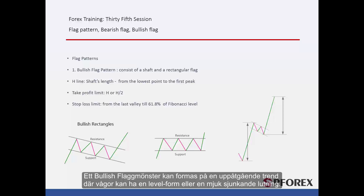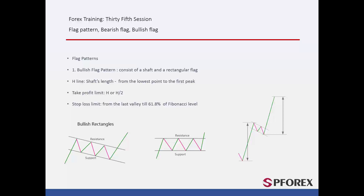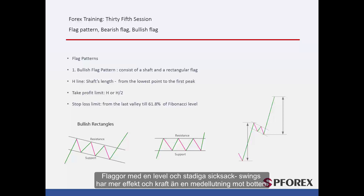A bullish flag pattern can be formed on an upward trend, in which waves may have a level shape or a gentle downward slope. A flag with level and steady zigzag swings would have more effect and power rather than a flag with a moderate slope towards the bottom.